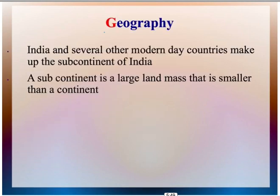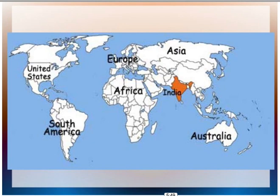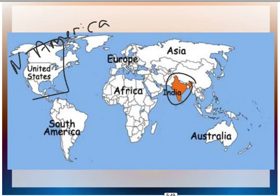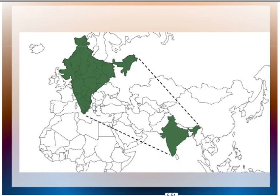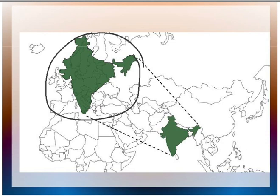We'll start with geography. India and several other modern-day countries make up the subcontinent of India. A subcontinent is a large landmass that is smaller than a continent, but kind of juts out of a continent. You have here a map of the world, and you have India — large, but part of the larger portion of Asia. For size comparison, you can see that India is actually almost the size of continental Europe. That's a fairly large area. Hence, subcontinent.